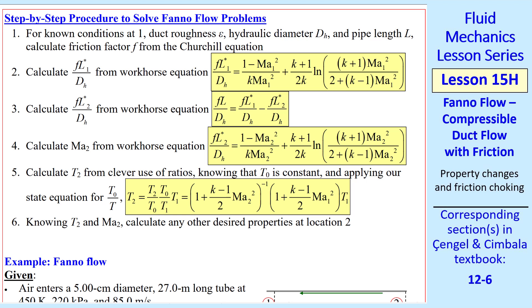Now we're ready to solve Fanno flow problems. Here's the procedure, which I'll go over very quickly, and then do an example problem. We start with known conditions at 1, duct roughness epsilon, hydraulic diameter DH, and pipe length L, from which we can calculate the friction factor from the Churchill equation. Once we have F, we use our workhorse equation to calculate FL star 1 over DH, and then our other workhorse equation, and this time we'll solve for FL star 2 over DH. Once we know that, we can calculate Mach number 2 using our workhorse equation again. This is the hardest part, since this is an implicit equation for Mach number 2. Once we have MA2, we can calculate temperature T2 using these ratios and our state equations. Finally, step 6, once we know T2 and MA2, we can calculate any other desired properties at 2. This is best illustrated by an example.